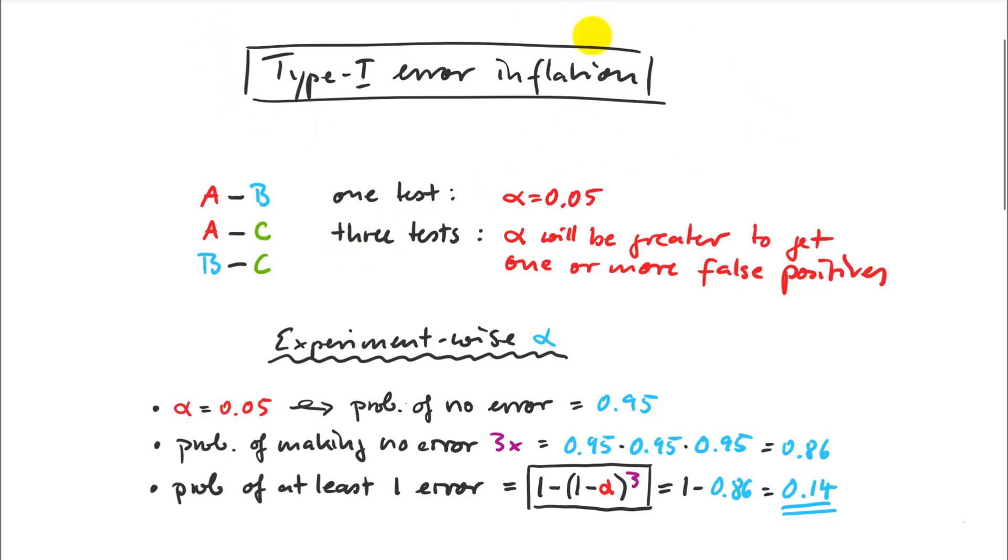Let's start with the Type-I error inflation. The idea is if I do one t-test, comparing variety A and B, if I set an alpha level of 0.05, I have a 5% chance of being wrong about this being a significant difference. If I do three tests, in this case I would have to compare A and B, A and C, and B and C, those errors add up.